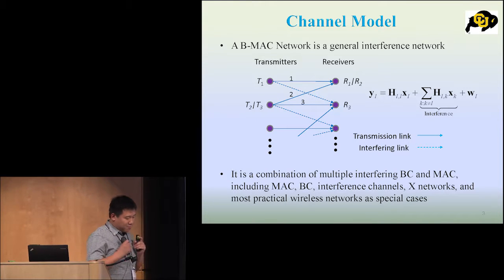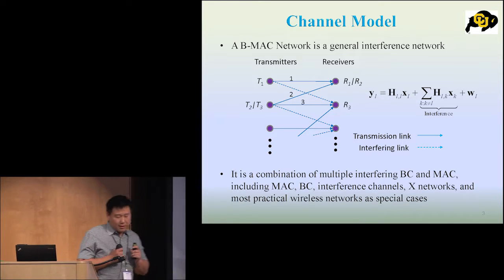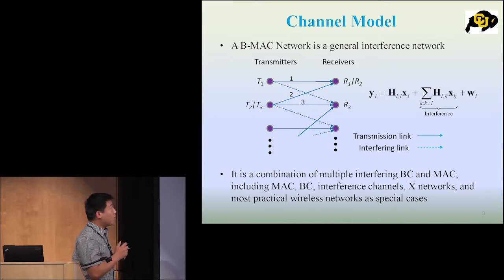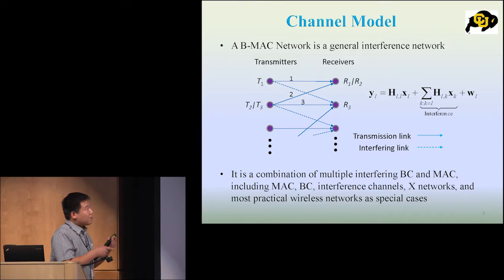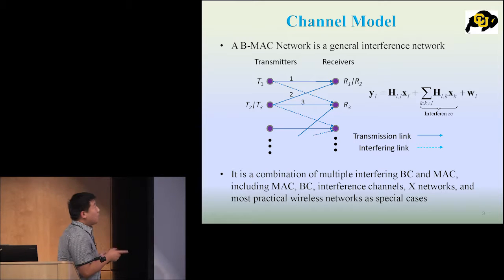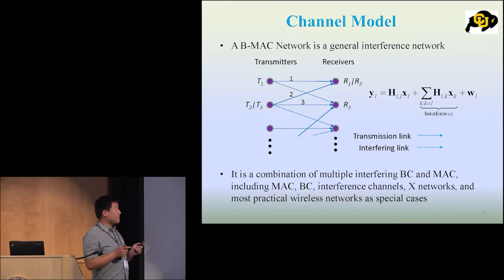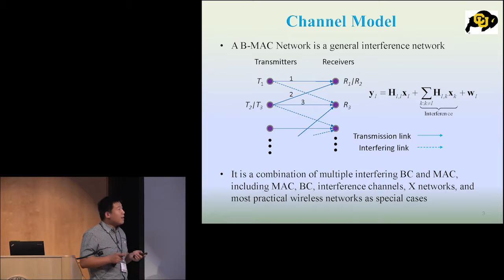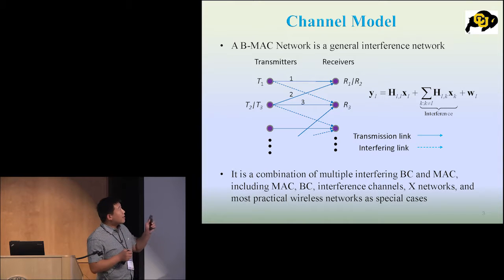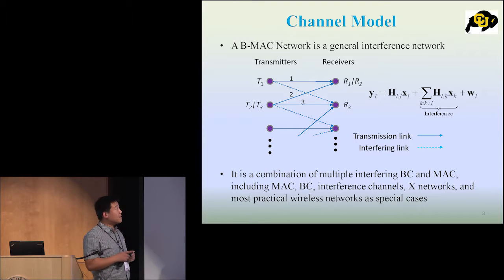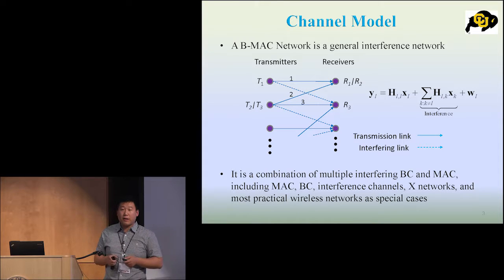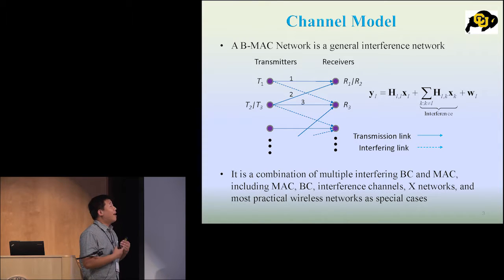Our problem comes from this channel model. This is a so-called BMAG channel network, which is a quite generalized interference network. For example, in the picture here, we have two transmitters and two receivers. The solid lines are the transmission links and the dashed lines are interfering links. If you look at the second transmitter, it has two outgoing transmission links, so it's kind of the broadcast channel, and for the first receiver, it has two incoming transmission links, so it's kind of the multiple access channel.